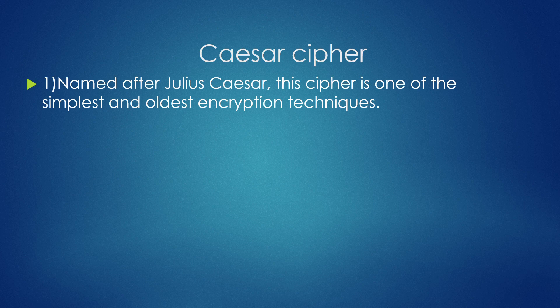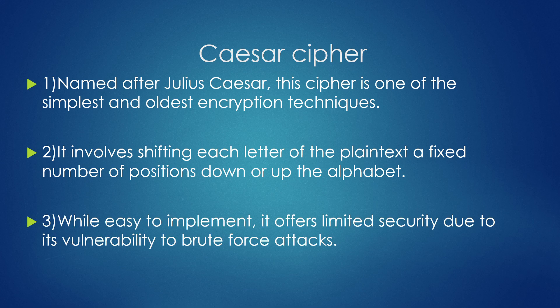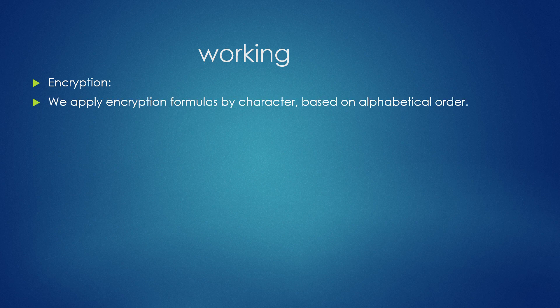The Caesar cipher, named after Julius Caesar, is one of the simplest and oldest encryption techniques. It involves shifting each letter of the plaintext a fixed number of positions down or up the alphabet. While easy to implement, it offers limited security due to its vulnerability to brute force attacks.